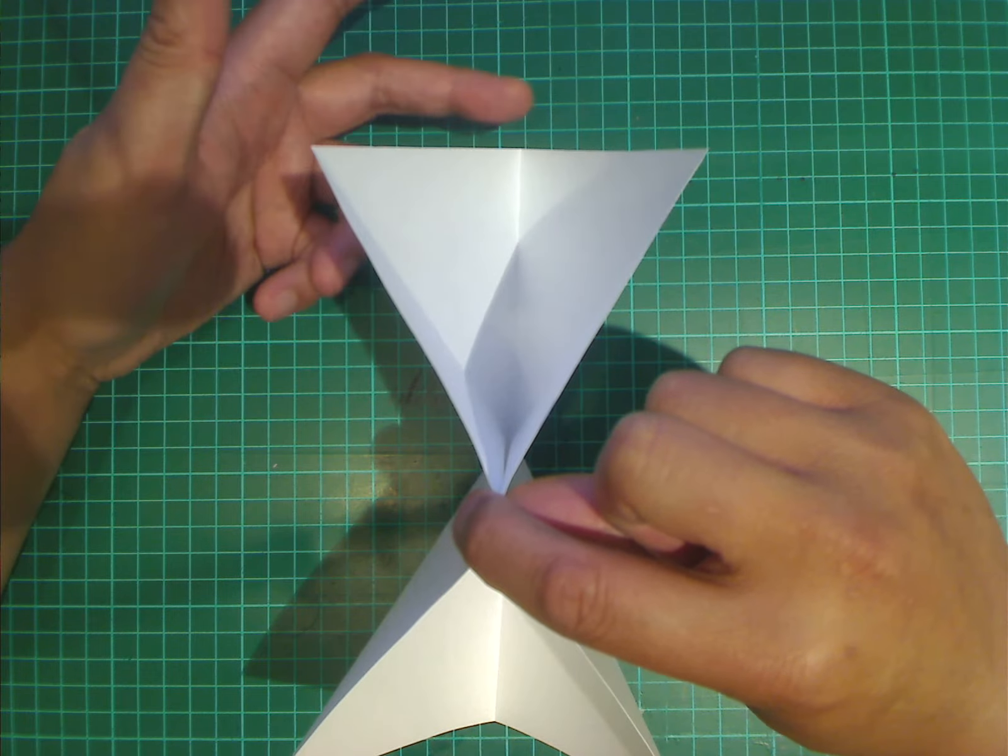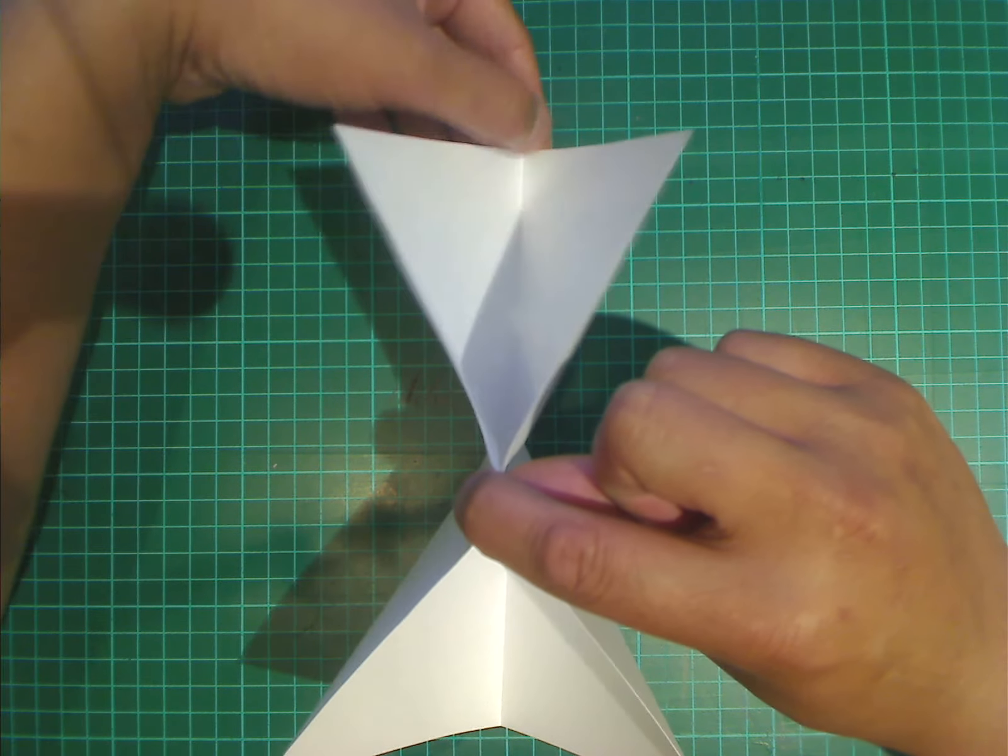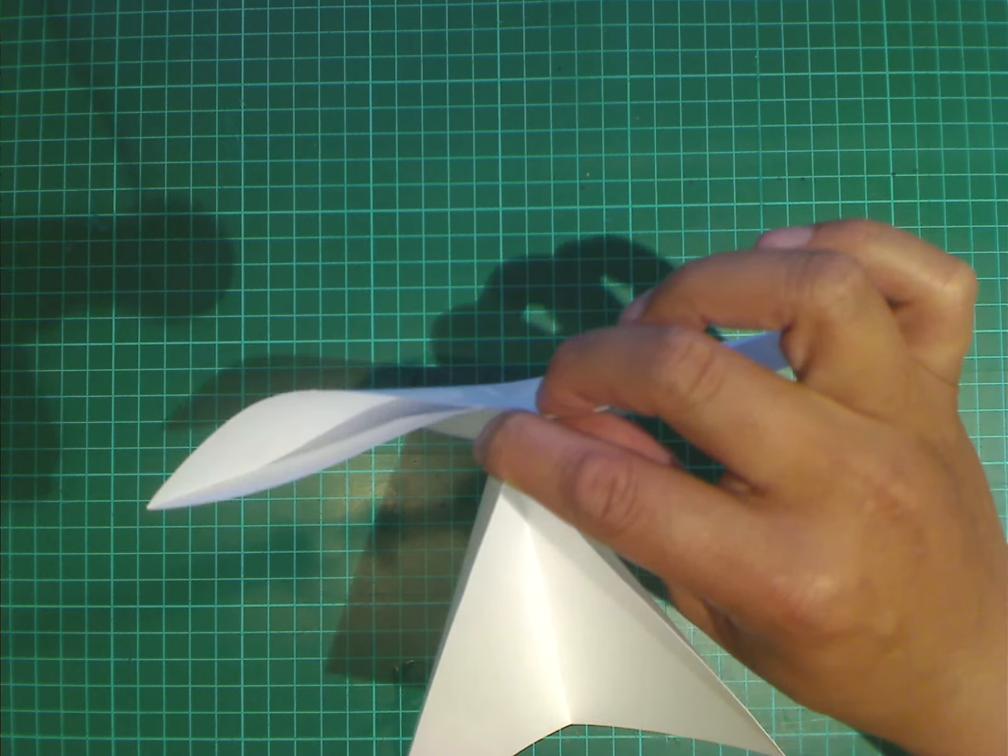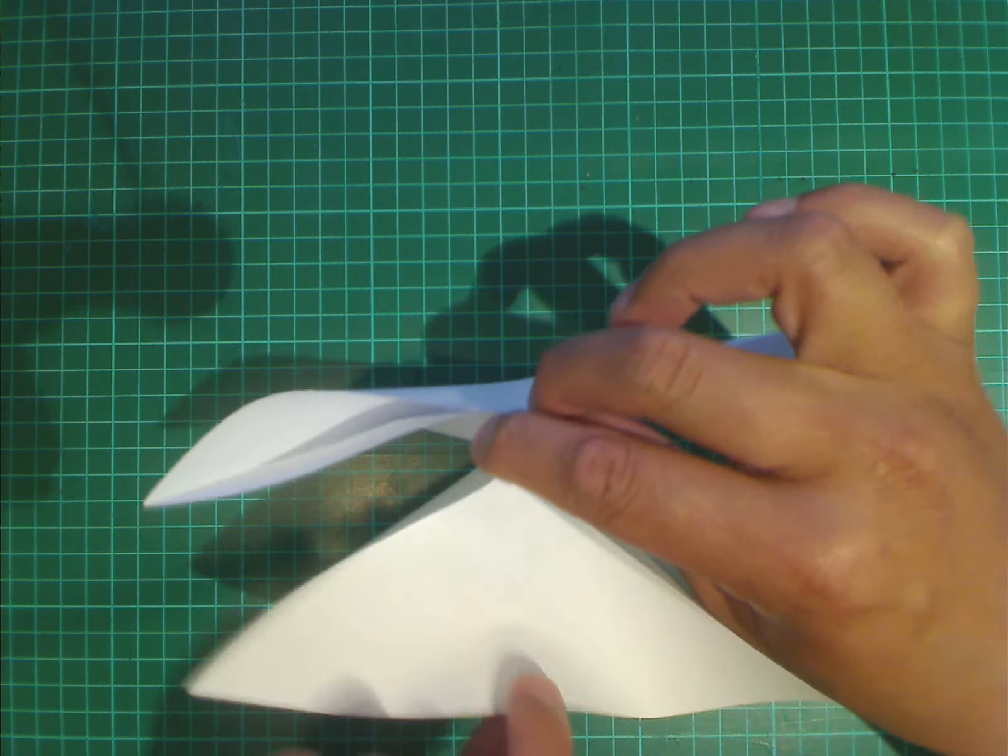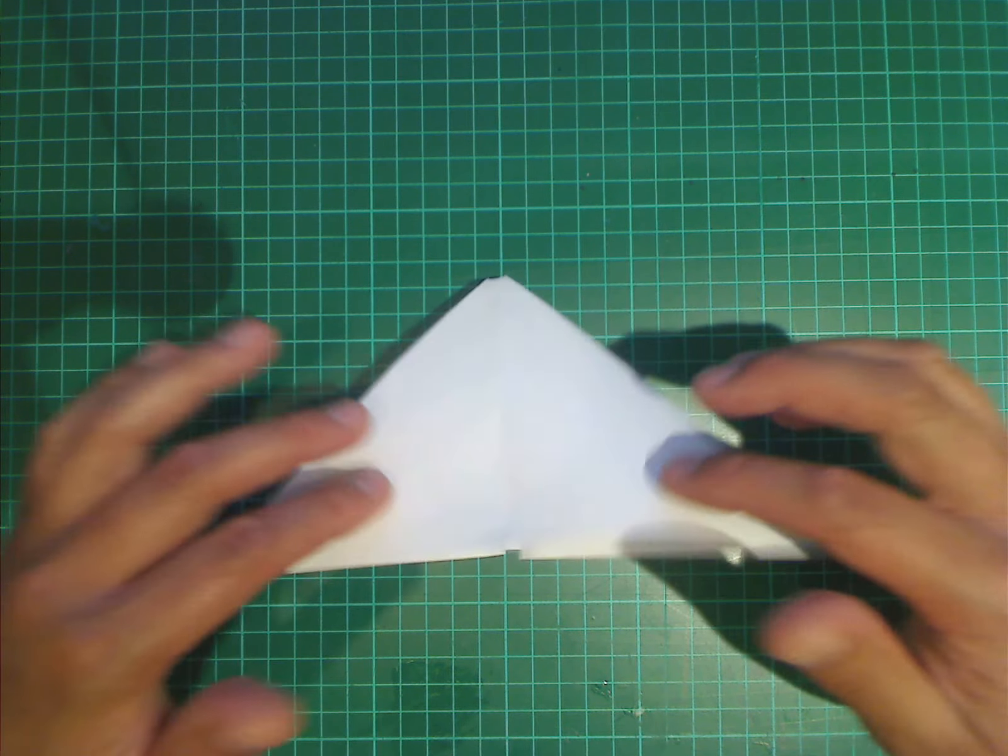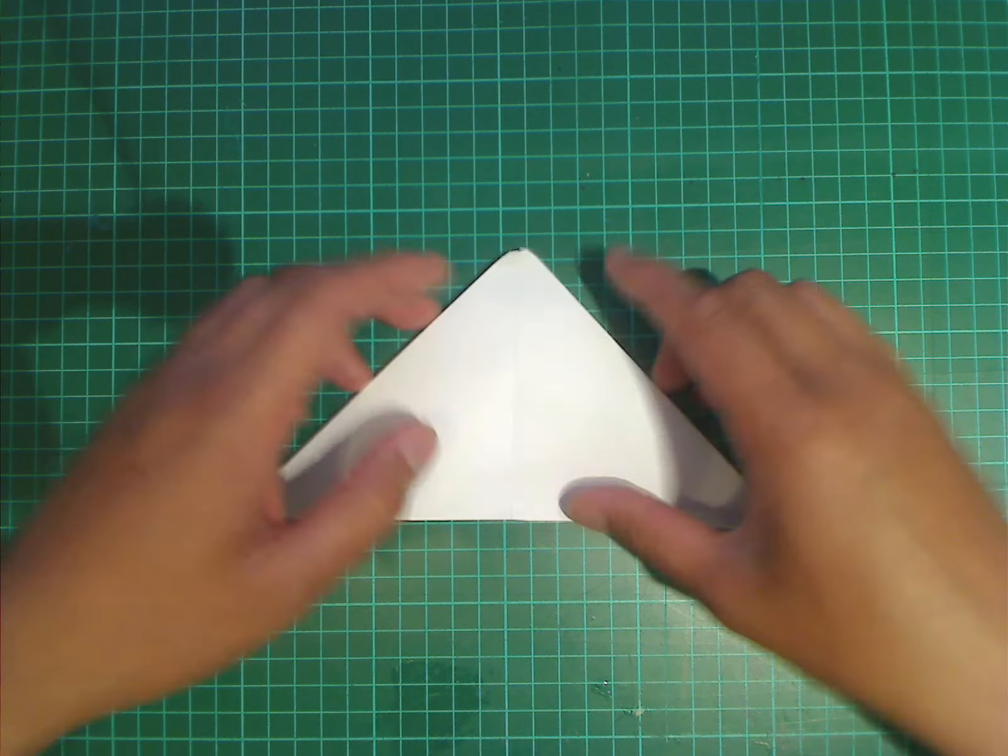We're also going to bring the top midpoint and the bottom midpoint up to meet your finger and thumb. So we're going to bring this one up. And then we're going to bring this one up. And if you place the paper down on a table now, you should notice that it collapses into a triangle shape.